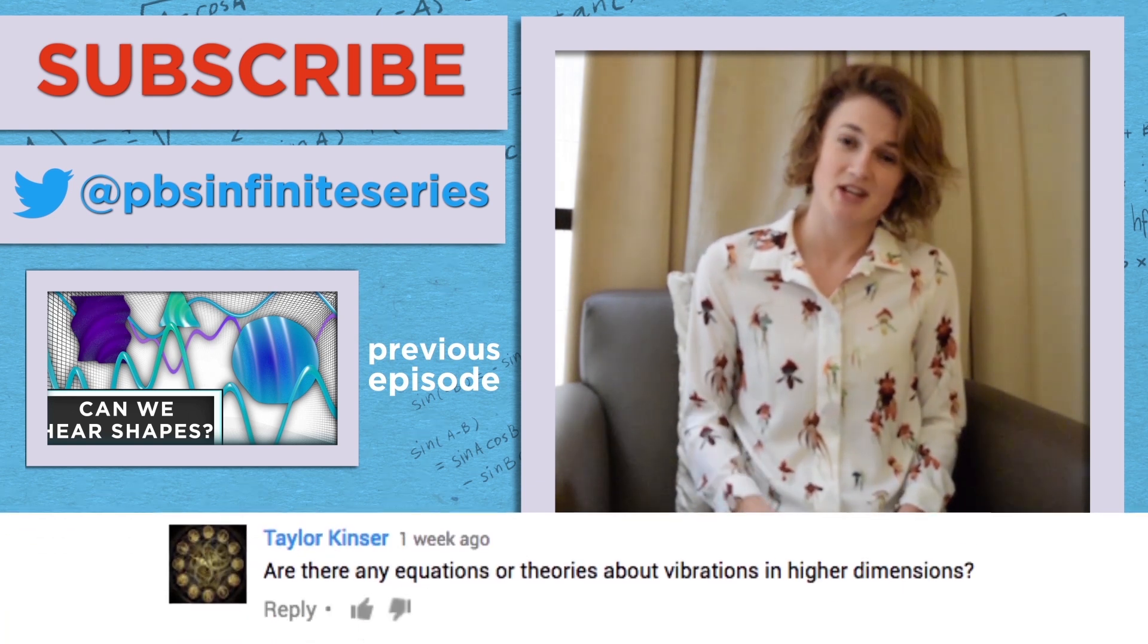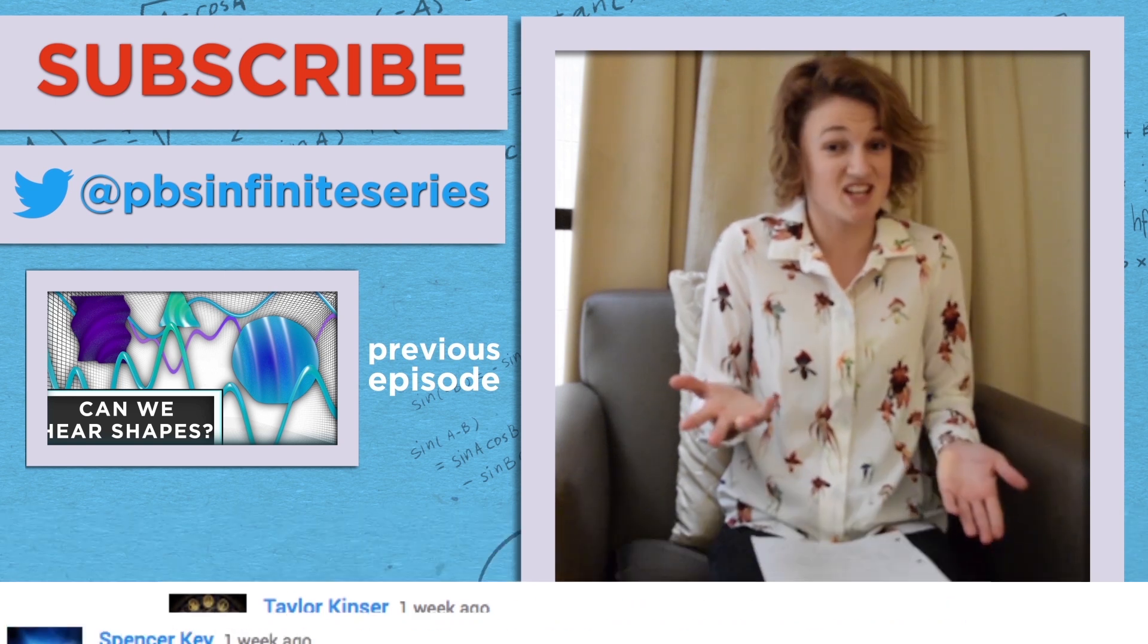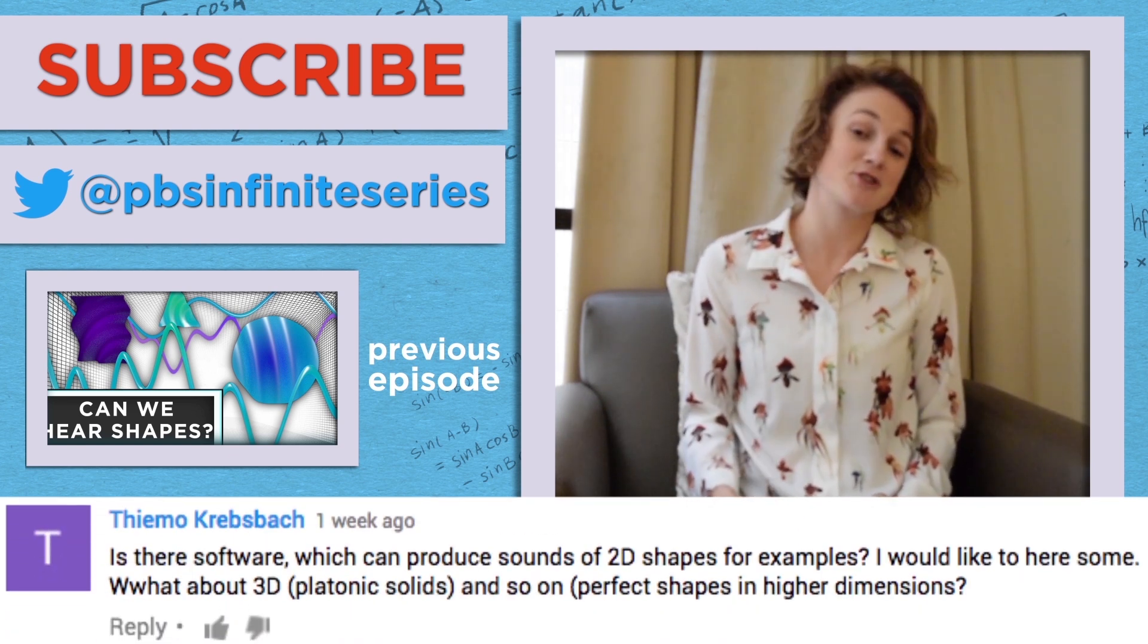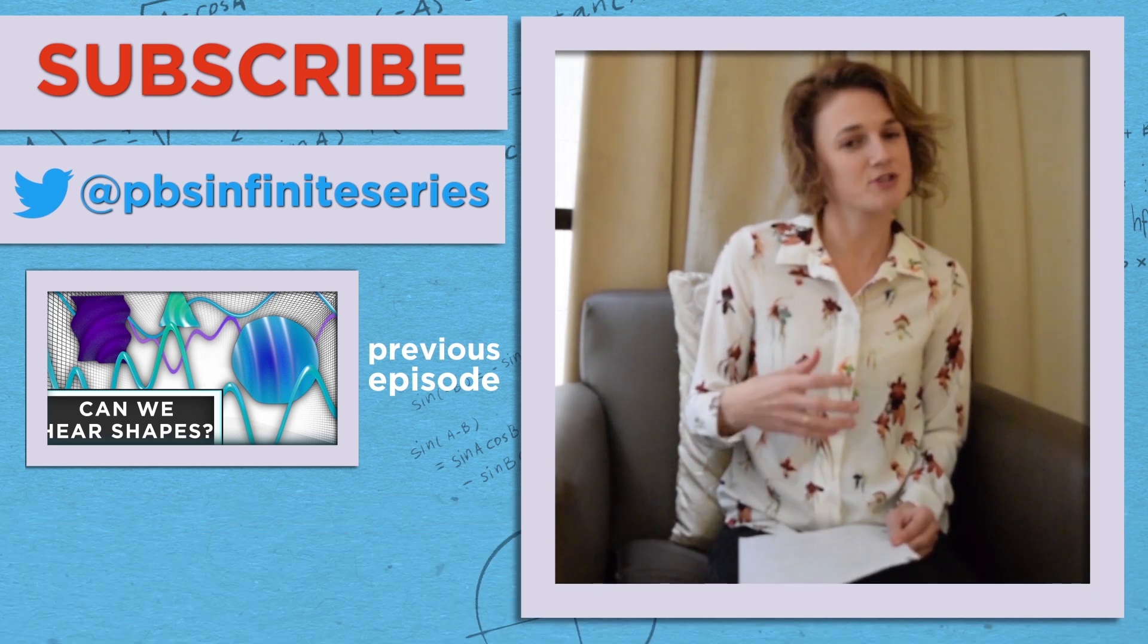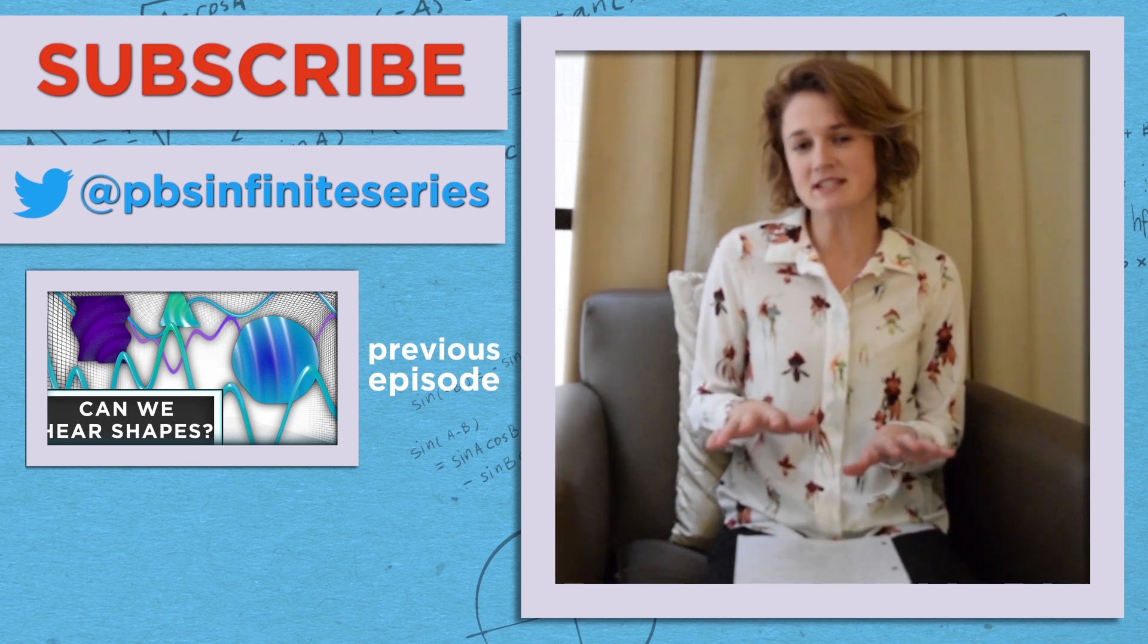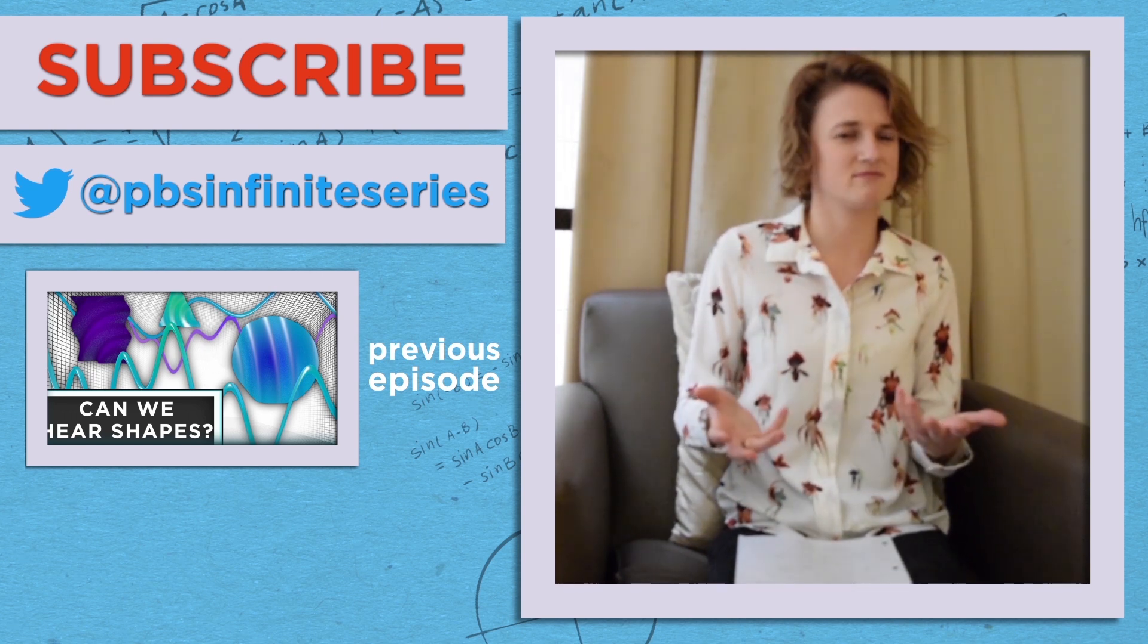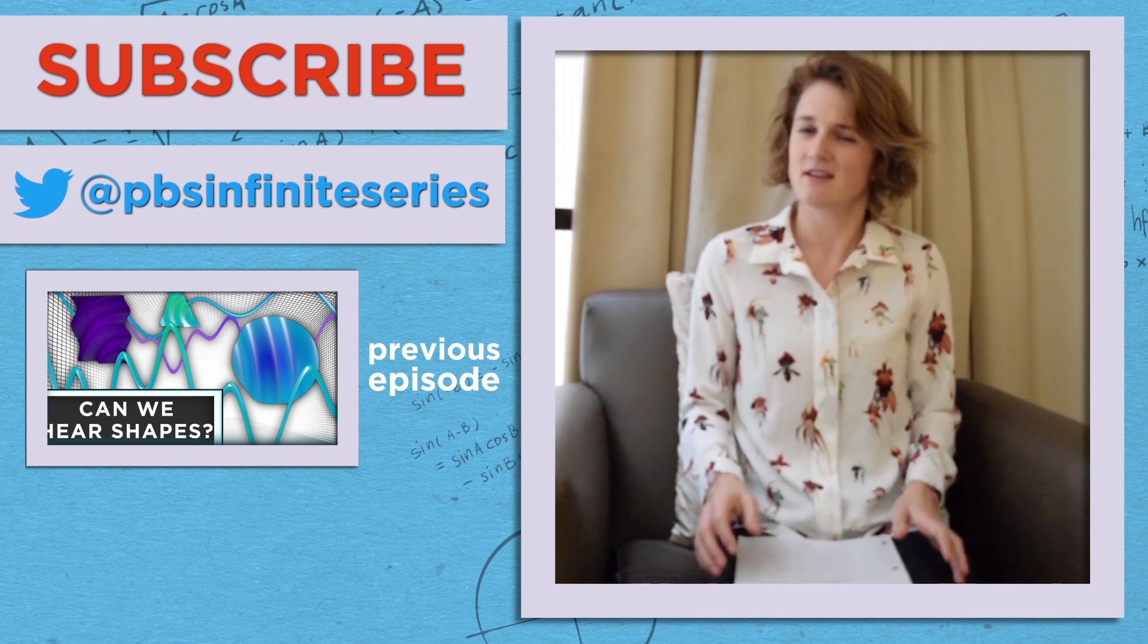A lot of you wanted to know, does this question make sense in other dimensions? It does. And in fact, it makes sense in other contexts. The famous topologist John Milner pointed out that there are two 16-dimensional tori that sound the same. A torus is just the fancy math word for a donut. So he's really saying that there are two 16-dimensional donuts whose eigenvalues of the Laplacian are the same. So in that sense, they sound the same, but they have a different shape.